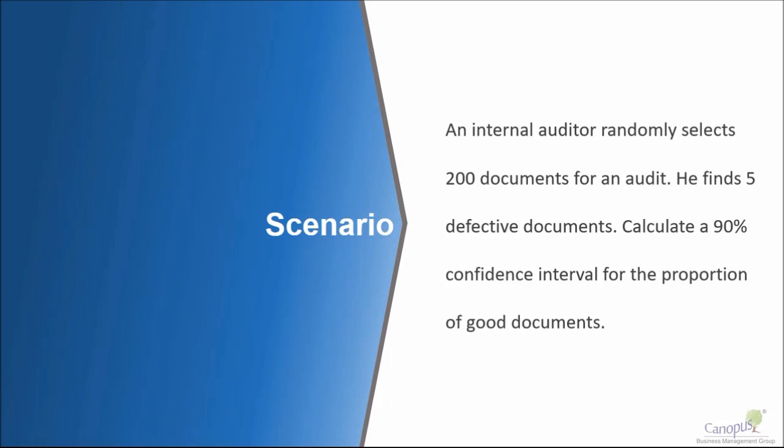An internal auditor randomly selects 200 documents for an audit. He finds that 5 documents are defective. At 90% confidence level, for the proportion of good documents, find out what is the confidence limits.